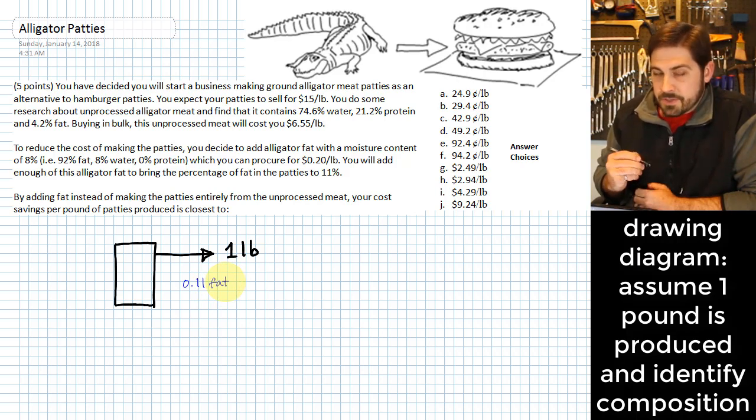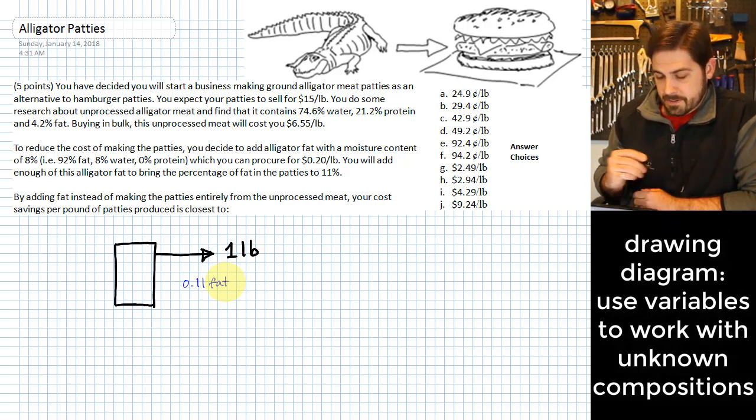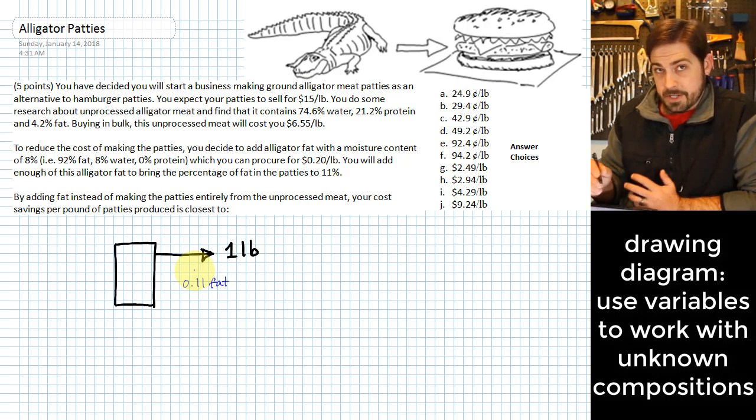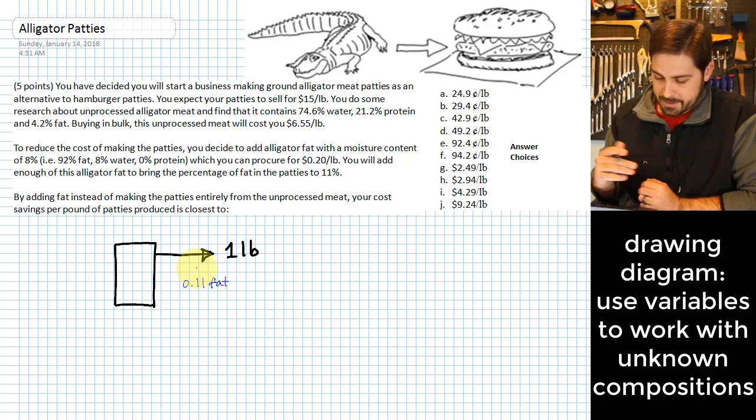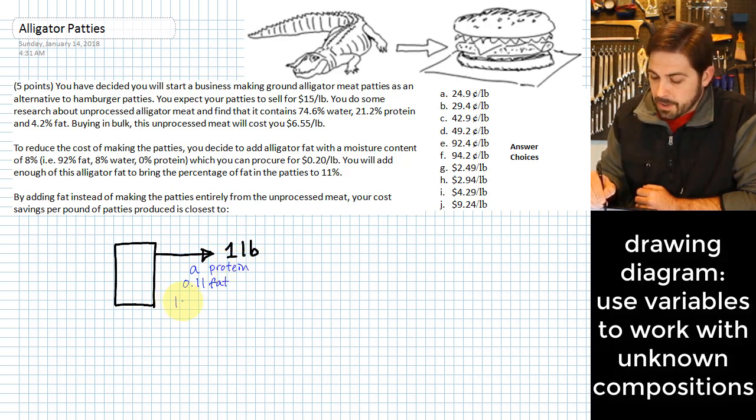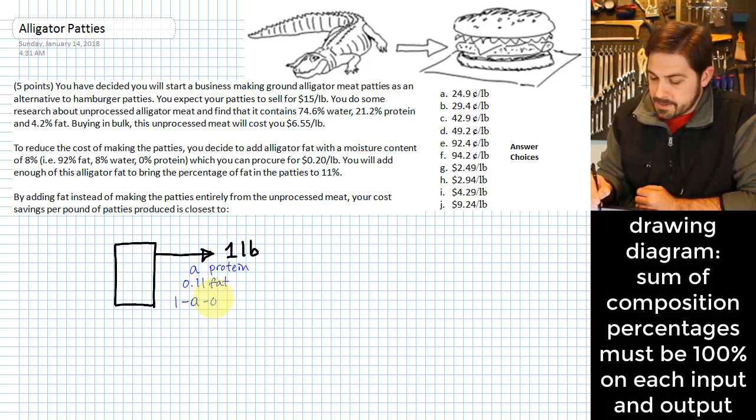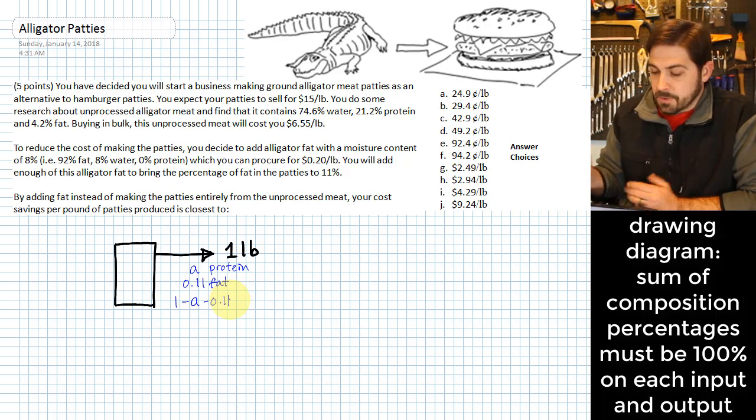We actually don't know any more about this amount of each of the percentages of each of the components that are going to be in that stream. And so I'm going to label A for protein, and I'm going to label 1 minus A minus 11%, and that is the remaining material, which is just water. Okay, so that takes care of that stream.